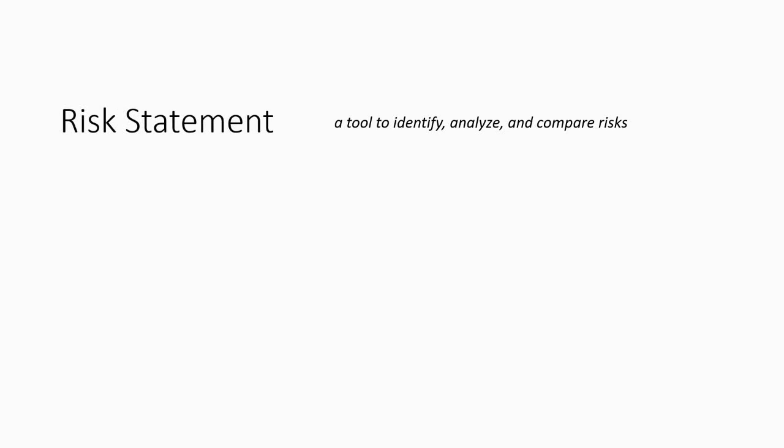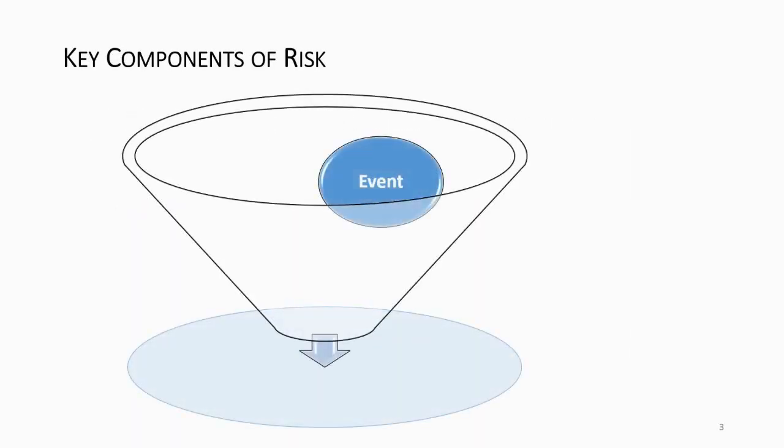How the risk statement is set up: if this particular event occurs by such and such a date, it will have a particular impact on the build. It will have this impact on cost or quality. So the items that you need in it is the event itself.